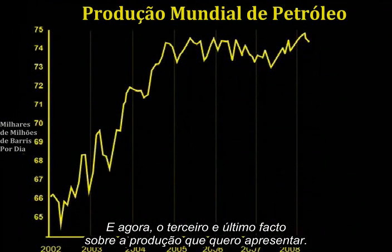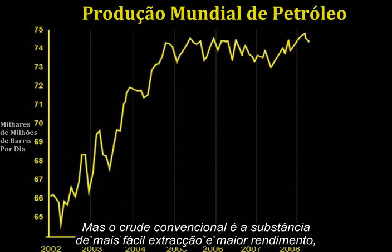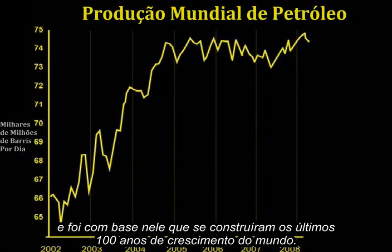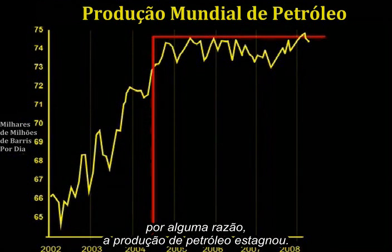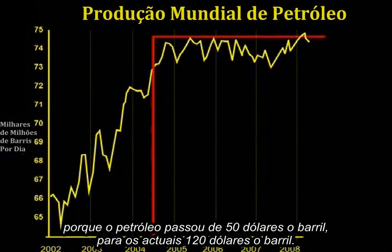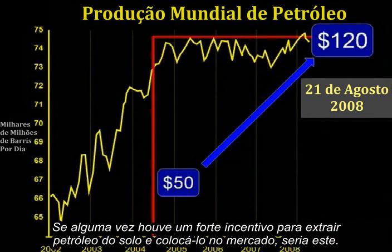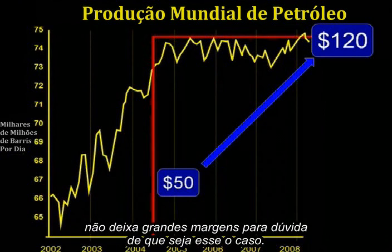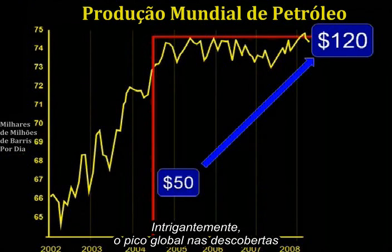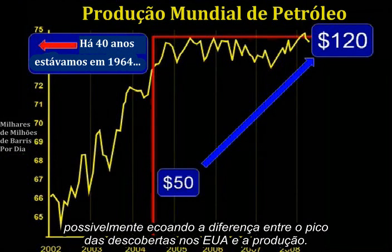Here is the third and final fact about production that I want to present. This is a chart of global conventional crude oil production only — it leaves out biofuels and some other liquids. But conventional crude is the easy, high-energy yield stuff, and that is what the world's past 100 years of growth has been built upon. We can see here that since mid-2004, for some reason, oil production has been flat. Whatever the reason for this is, it isn't price, because oil has climbed from $50 a barrel to $120 a barrel as of today. The global peak in discoveries was exactly 40 years prior to the leveling off of this production graph, possibly echoing the gap between the peak of U.S. discovery and production.